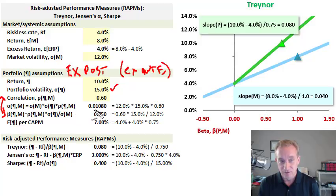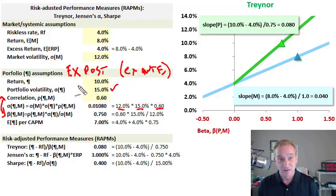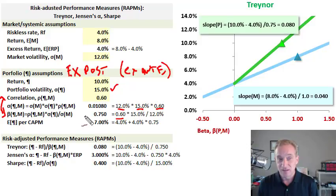I want to remind you of the direct connection between correlation and beta. Correlation informs a covariance of 0.01080 between the portfolio and the market. Covariance is always the product of the volatilities and the correlation: 12% market volatility times 15% portfolio volatility times 0.60 correlation gives the covariance. Beta is then the covariance divided by the variance of the market, or equivalently correlation multiplied by the ratio of volatilities—0.60 times 15/12—giving a beta of 0.750.